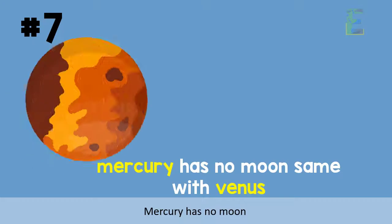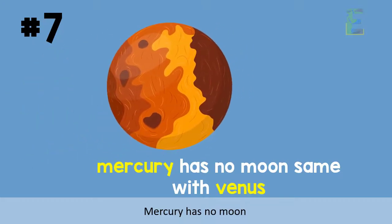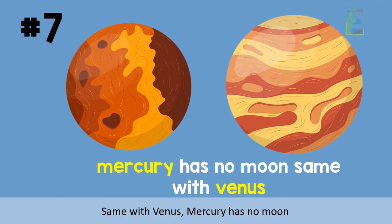Number 7. Mercury has no moon. Same with Venus, Mercury has no moon.